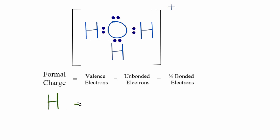Hydrogen is in group one on the periodic table, it has one valence electron. We're going to subtract the unbonded electrons, and hydrogen doesn't have any unbonded electrons. They're all involved in this chemical bond with the oxygen. So we'll put a zero right here.